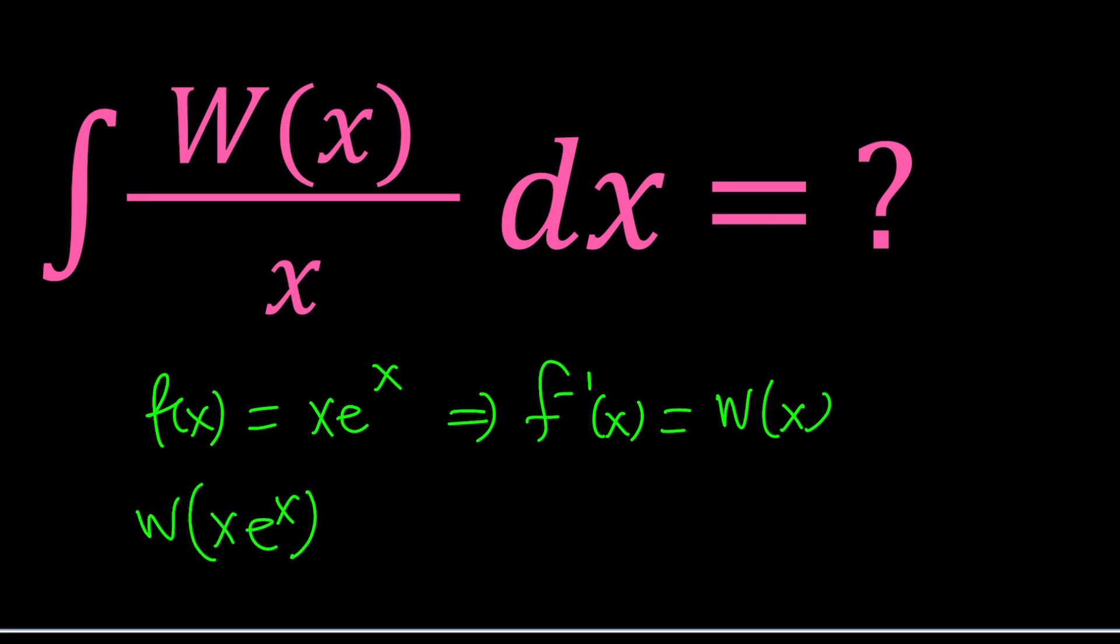In other words, if you apply Lambert's W function on x e to the x, which would be applying f inverse on f, that would give you the identity function, and that would be x.